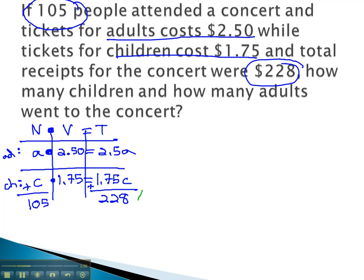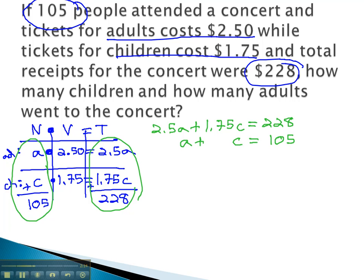Again, we'll get our equation from the last column, 2.5A plus 1.75C equals 228, and from the first column, the number of adults plus the number of children equals the total number of 105. And we can now solve this system using either the addition or substitution method.